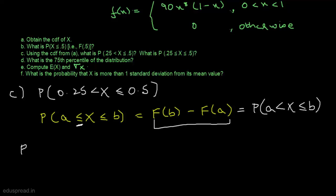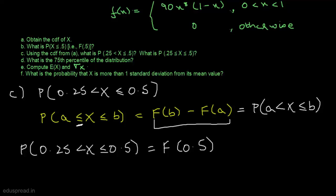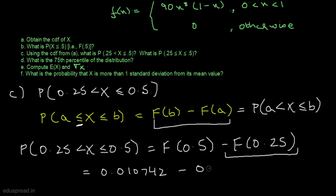So the probability that x is greater than 0.25 and less than or equal to 0.5 equals F of 0.5 minus F of 0.25. In part B we calculated F of 0.5 as 0.010742. Similarly, using the CDF from part A, F of 0.25 equals 0.000029. Solving this, we get 0.010713.